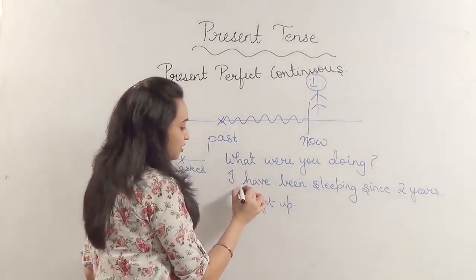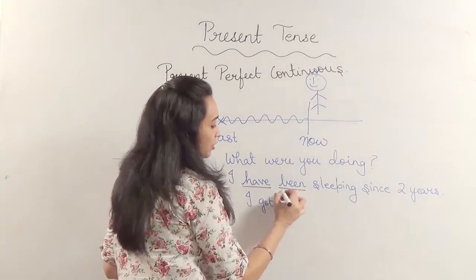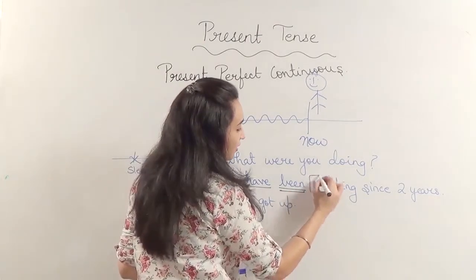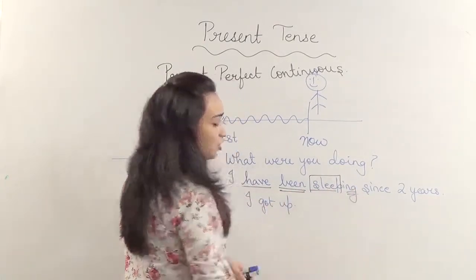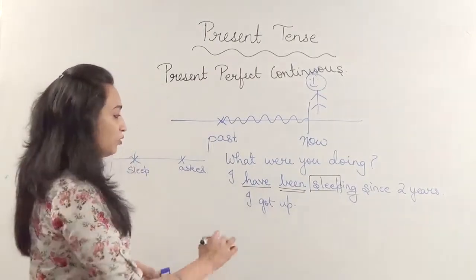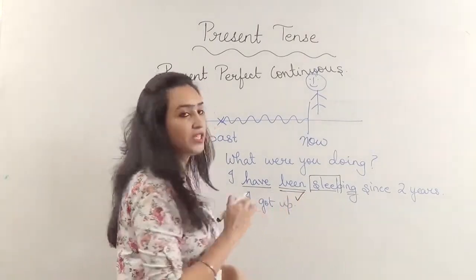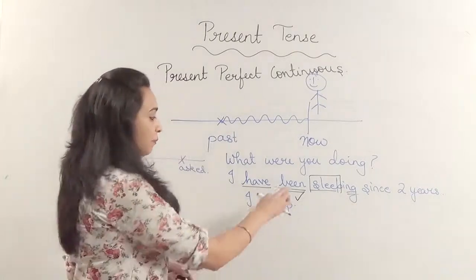Now look at the form I have used: have been and then sleep plus ing. Now this been never changes, so it has to be been.